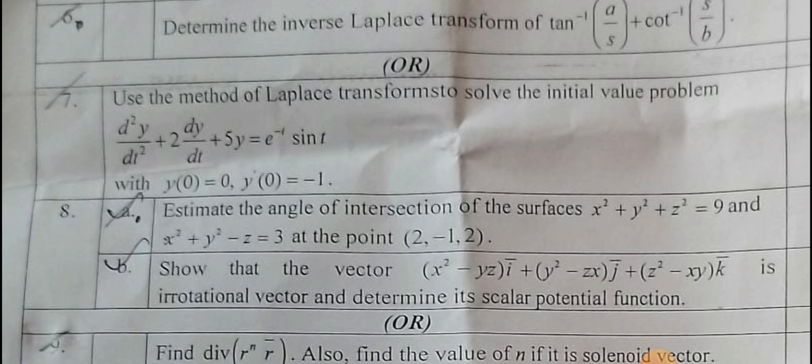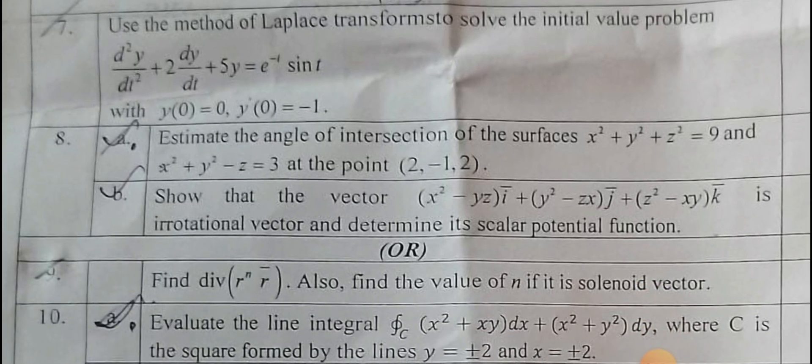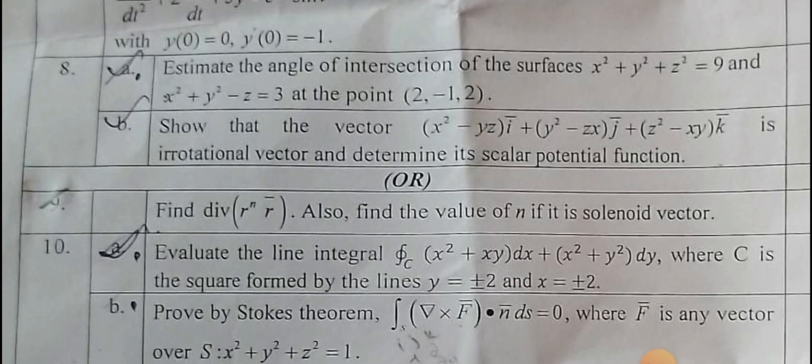Show that the vector is irrotational. Curl of that vector equals zero, and directly you are calculating the scalar potential for that. Next one.